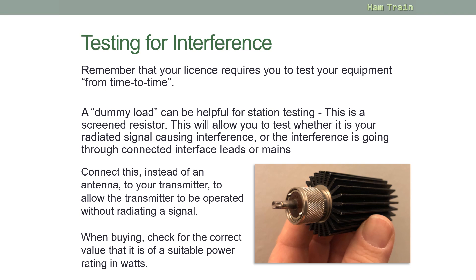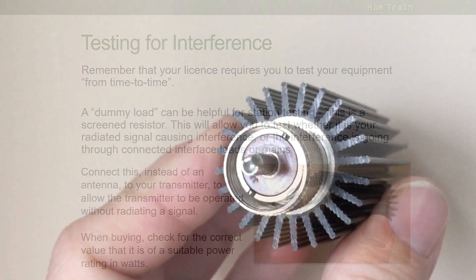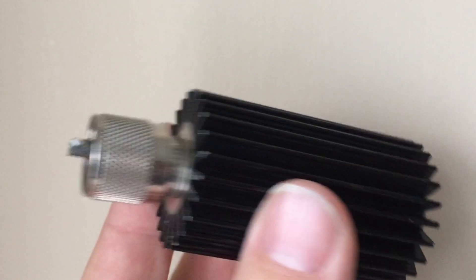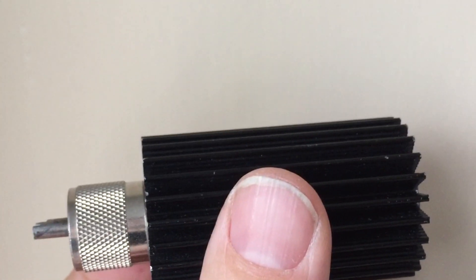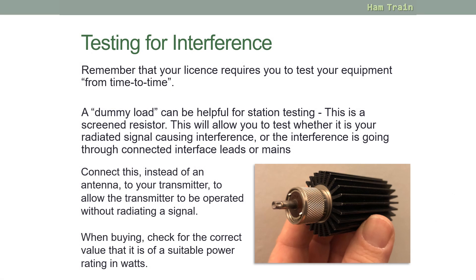Some information now on how to test for interference. You'll hopefully remember from the license condition modules that you are required by your license to test your equipment from time to time. A piece of equipment called a dummy load can be very helpful for station testing. This is basically a screened resistor. It will allow you to test whether your signal is causing interference, or whether the interference is going through connected interface leads or the mains. To use a dummy load for testing, instead of connecting an antenna to your transmitter, you connect the dummy load to the transmitter. You then transmit as normal, and your signal will go into the dummy load and not be radiated. When buying a dummy load, it's important to make sure you get one that's the correct value, to make sure it's suitable for the power that you'll be transmitting.